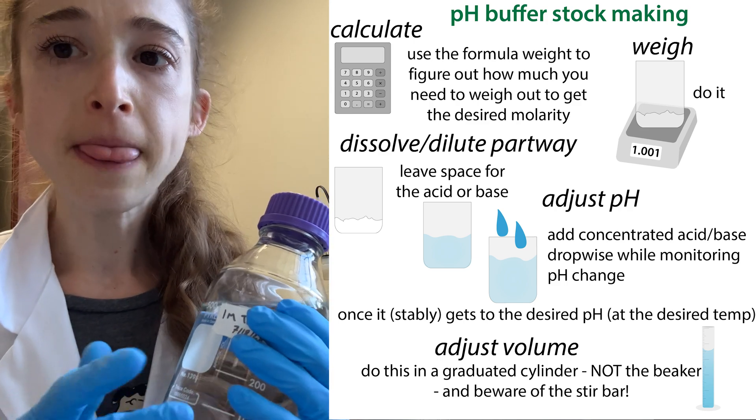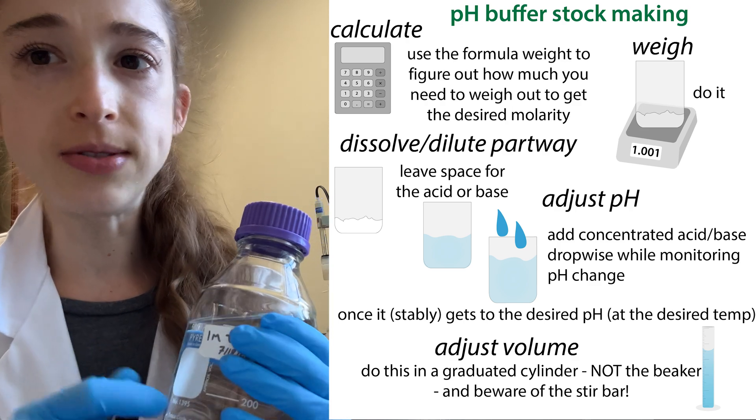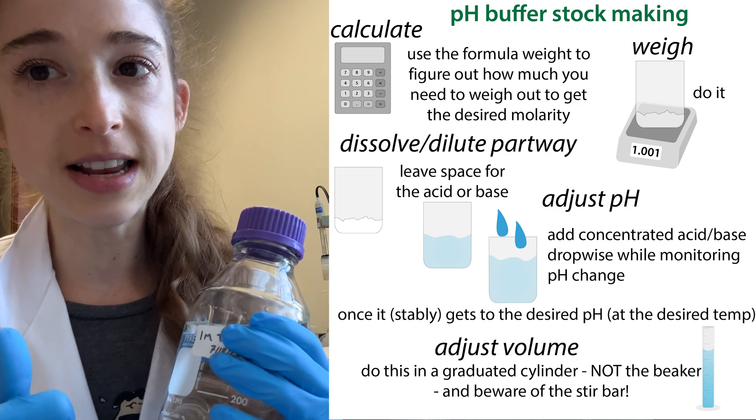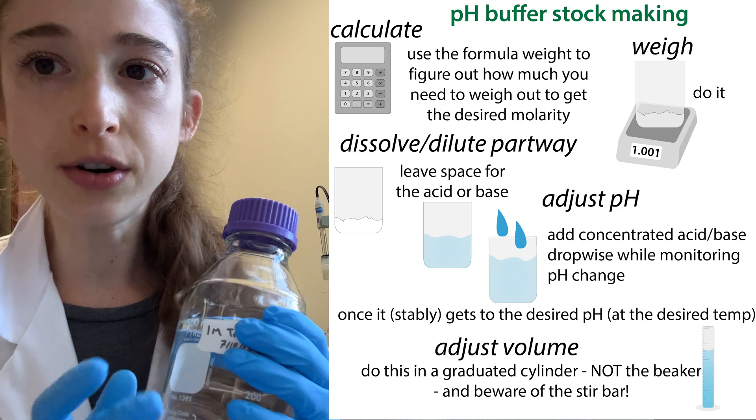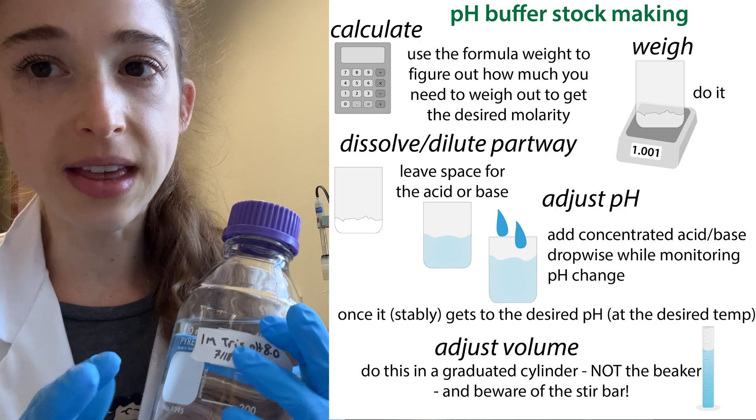If you were making a phosphate buffer, you would use phosphoric acid if you needed an acid. If you're using an acetic acid buffer, you'd use acetic acid, and so on.